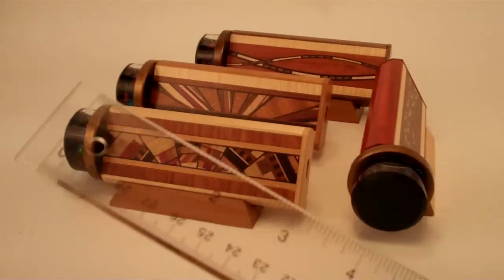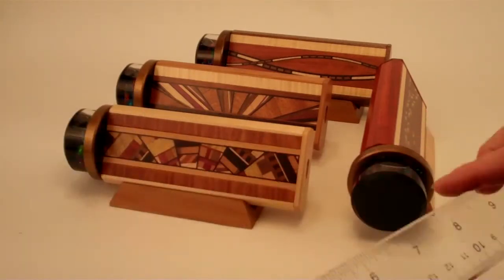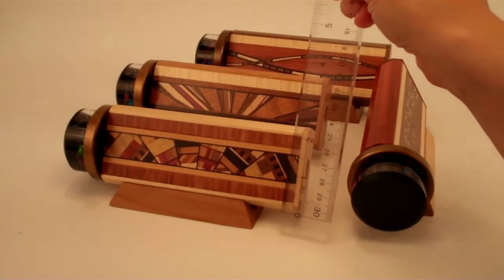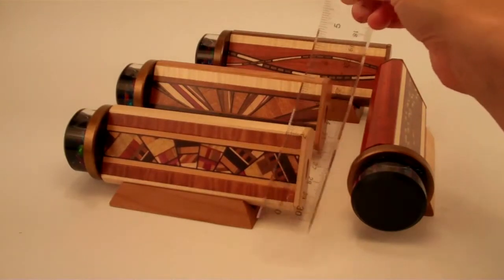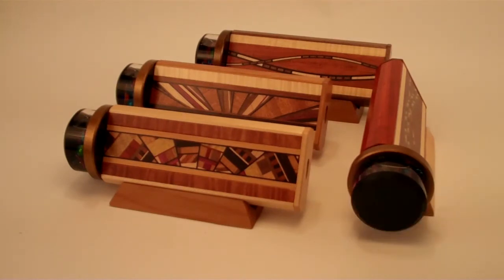The kaleidoscope itself measures approximately seven inches in the overall length, and as it's held in the hand about two and a half inches, and the diameter of the object cell about two inches as well.